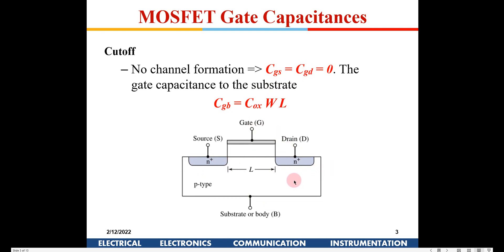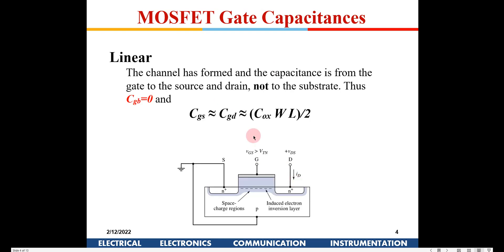In the linear region, a channel is formed and CGS and CGD can each be considered as COX·W·L/2. Whatever was the total gate capacitance gets uniformly coupled to both the source and the drain. We can say there is no capacitance between the gate and the body in this region.